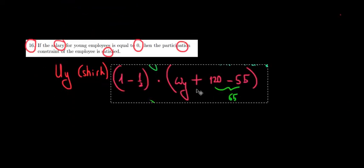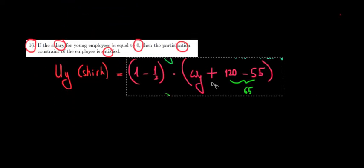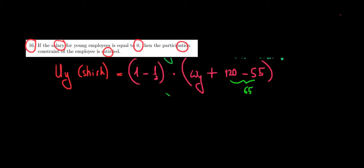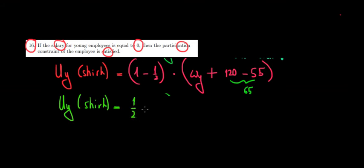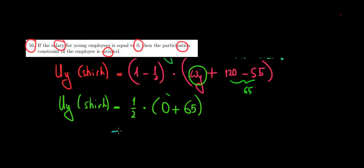This was the utility of shirking. Now, because we assume the wage of the young employee is 0, what will the utility of the young guy be when shirking? Well, that probability is just one-half, multiplied by the utility: 0 plus 65, which is 65. So 65 times one-half is 32.5. That would be the utility of a young guy shirking.